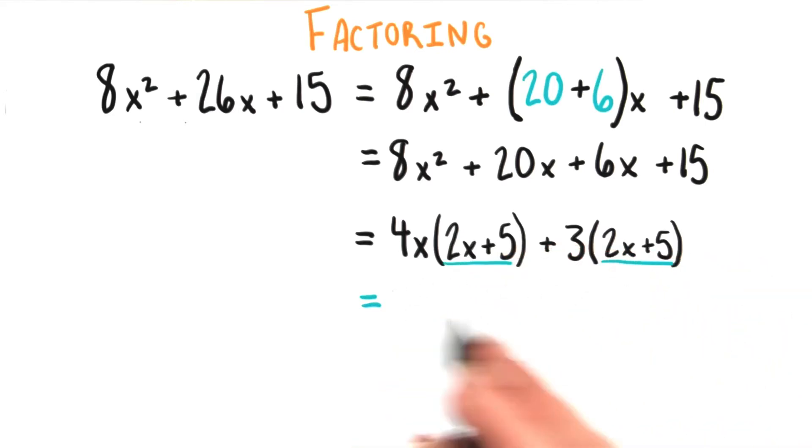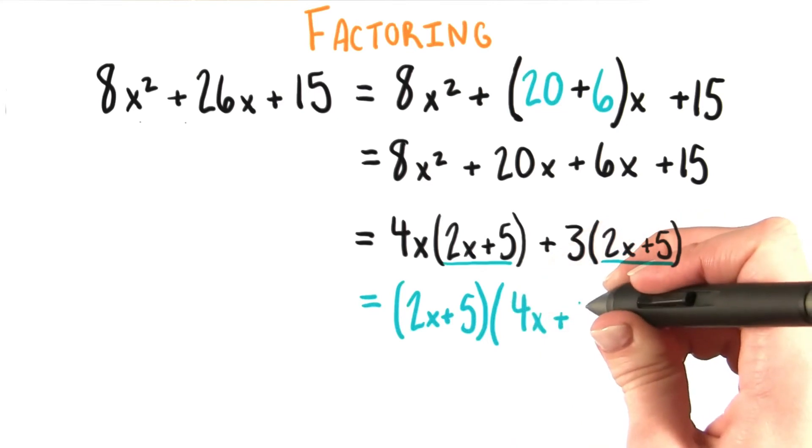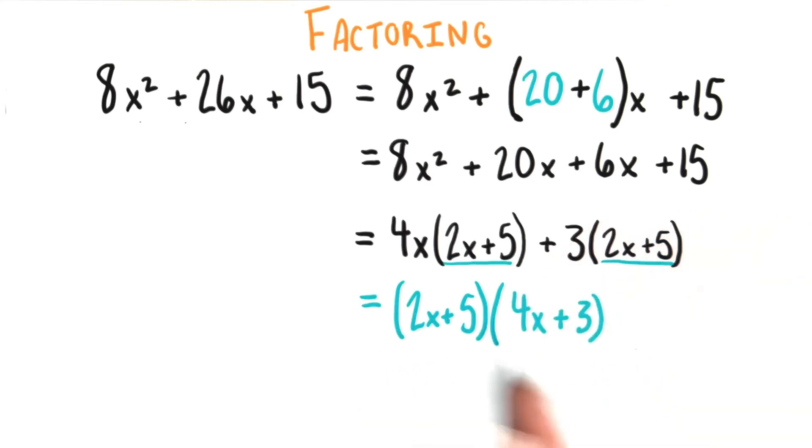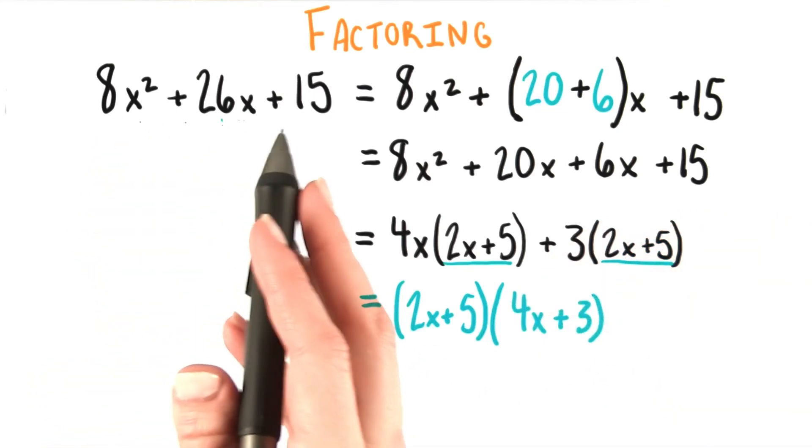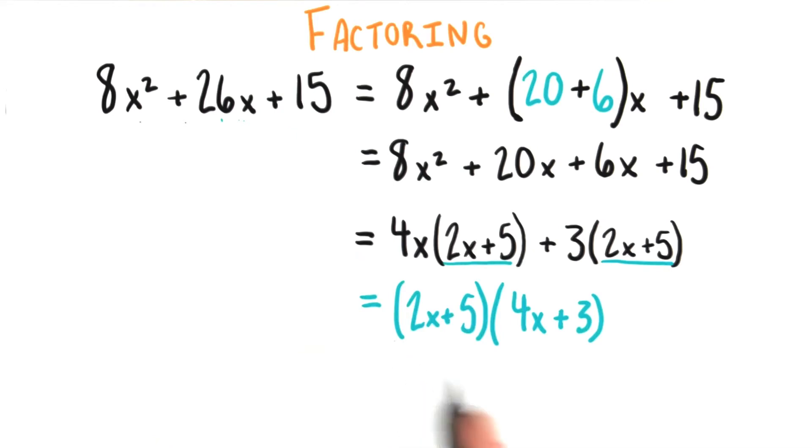So we can start by pulling that outside, and then we can write the things that it multiplies, 4x plus 3. So the final factored form of 8x squared plus 26x plus 15 is just this expression, the quantity 2x plus 5 times the quantity 4x plus 3.